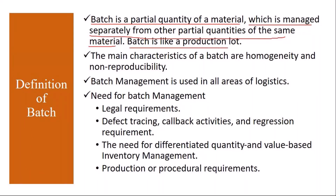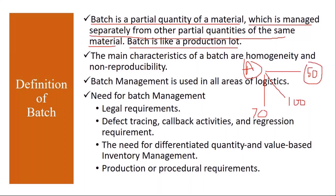Batch is like a production lot. Suppose you are producing a product — today you produced 50 kg, same product. Next day you produce 100 kg, same product. And next to next day you produced 70 kg, same product. Now how to identify these quantities? So for this you will assign a unique number — let's say you assign A1 for 50 kg, A2 for 100 kg, and A3 for 70 kg. These A1, A2, A3 are called batch numbers.